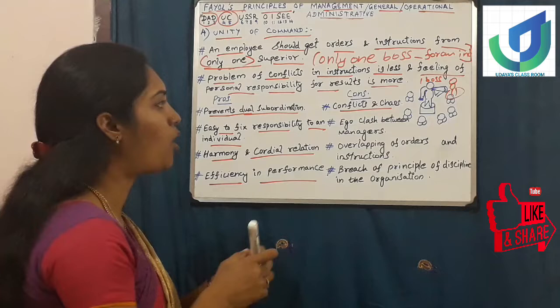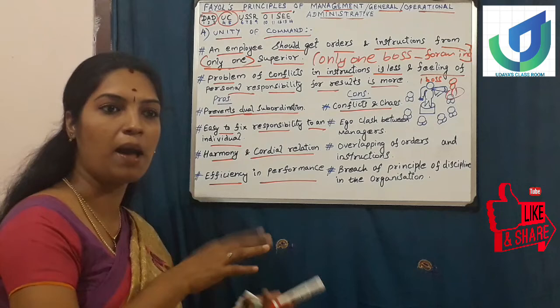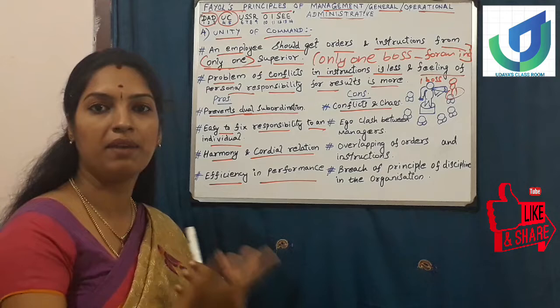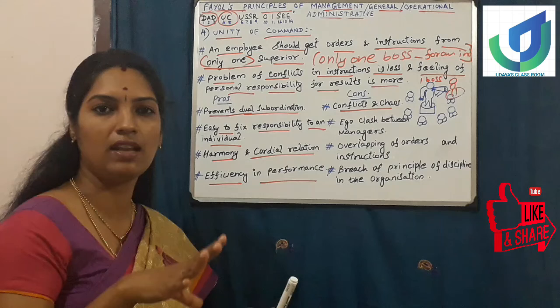Coming to cons: the first con is conflicts and chaos. When all the family members or two or three bosses are giving instructions, they themselves will fight. In many organizations it happens - one brother says 'I am the owner, I am giving instructions, why are you interrupting?' Like that, brother may ask sister. They themselves will fight, leading to conflicts and chaos. Even employees will be confused about whose instructions to follow.